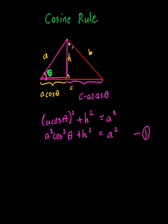The second equation is when I consider the second triangle and then use Pythagoras. Using Pythagoras on the second triangle, I'll end up with (c - a cos θ)² + h² = b². This will form my second equation.